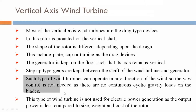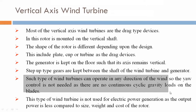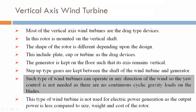Such type of wind turbines can operate in any direction of the wind, so yoke control is not needed, as there are no continuous cyclic gravity loads on the blades.